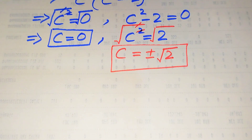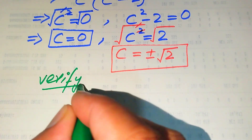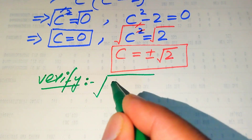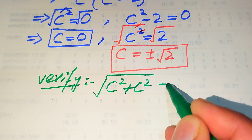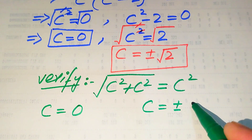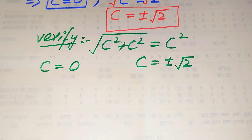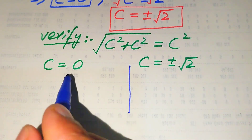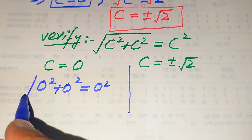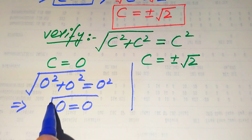Now we need to verify whether both of these values satisfy the original equation or are extraneous roots. We copy the given equation: the square root of c squared plus c squared equals c squared. On one side we verify c equals zero, and on the other side we verify c equals plus or minus square root of two. When we substitute c equals zero: square root of zero squared plus zero squared equals zero squared, giving zero equals zero. This is satisfied.